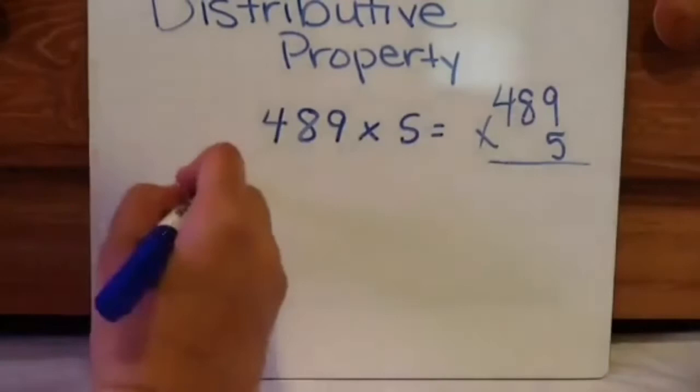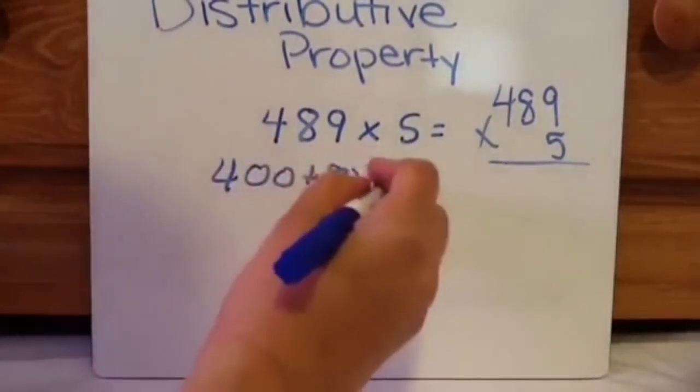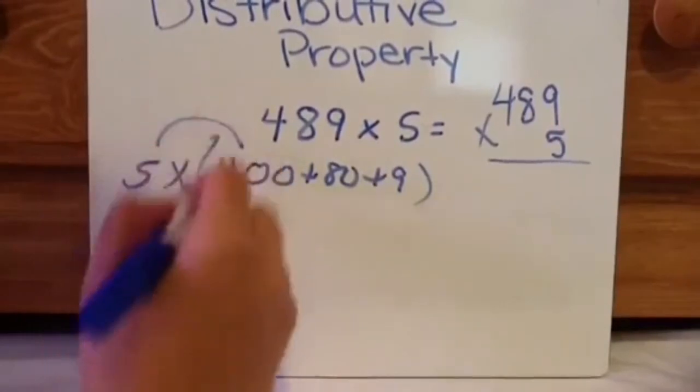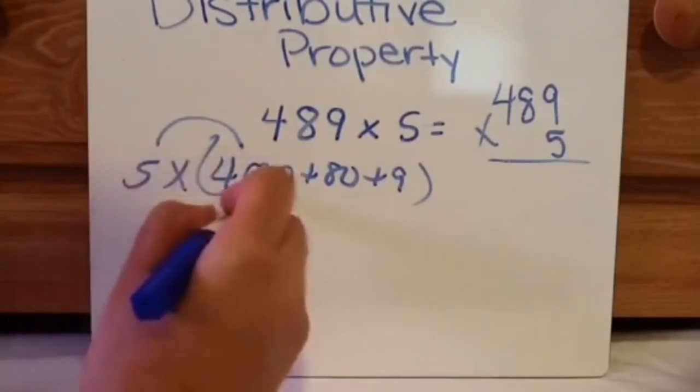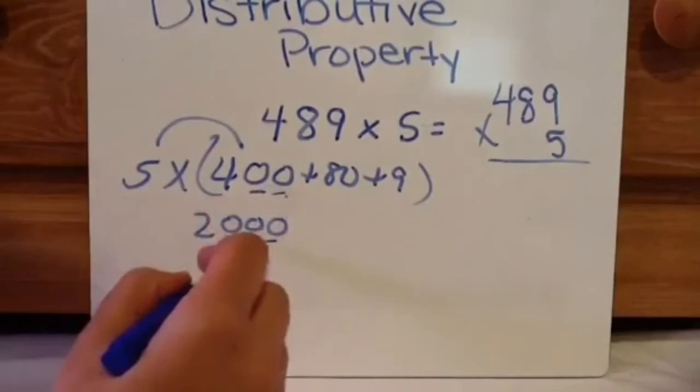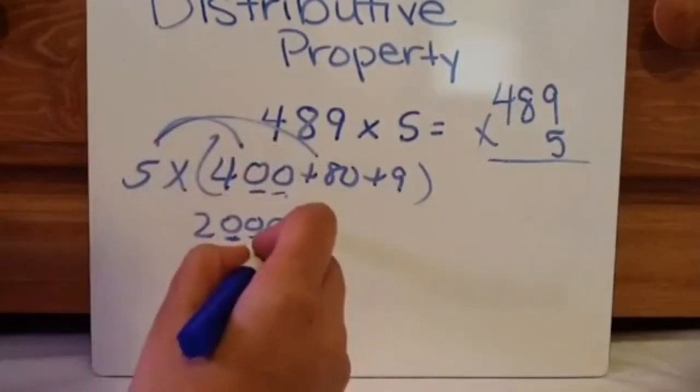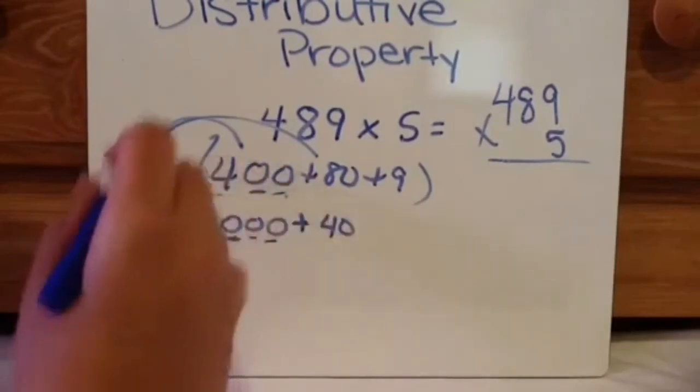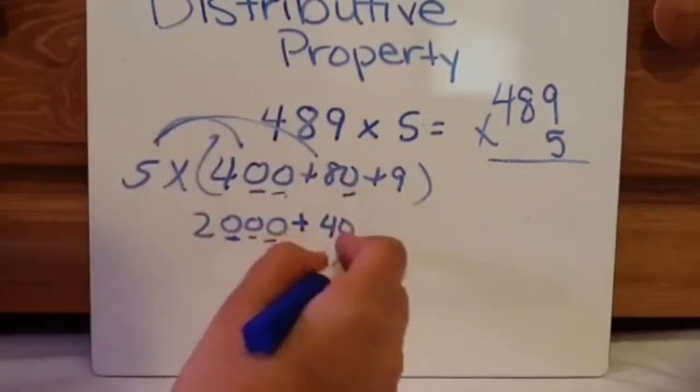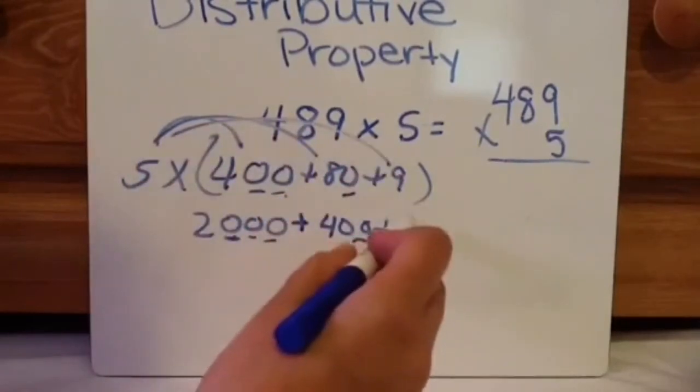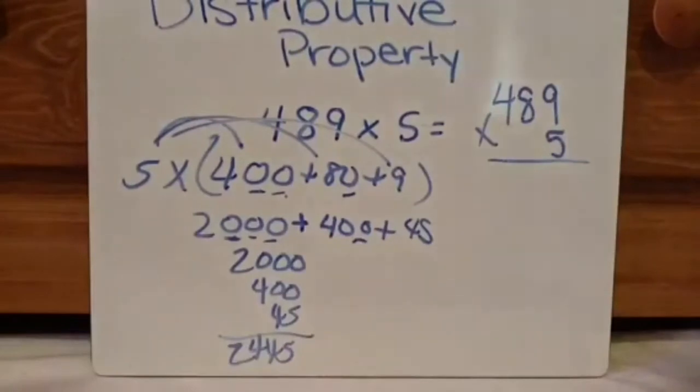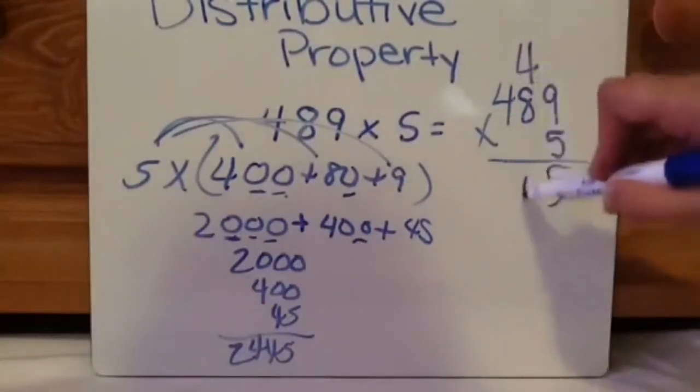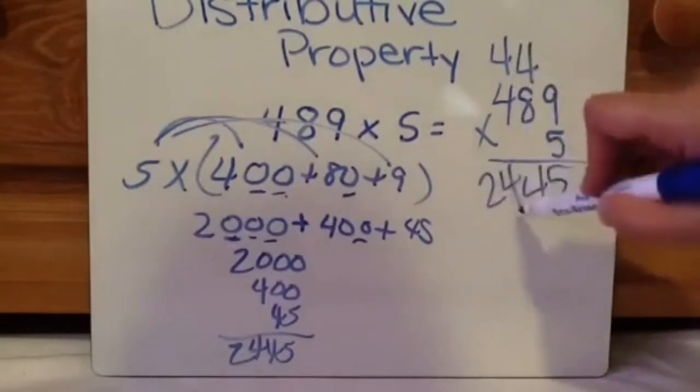Ready and check. Okay, so 400 plus 80 plus 9 times 5. 5 times 4 is 2,000. This 20 came from 5 times 4. Or that 0 came from 5 times 4. So that's why there's three zeros in my answer. These two zeros come here. Then 5 times 80 is 40. Well, 5 times 8 is 40, and then there's the zero. Then 5 times 9 is 45. So 2,000 plus 400 plus 45 equals 2,445. And you can check it. And my answers match up.